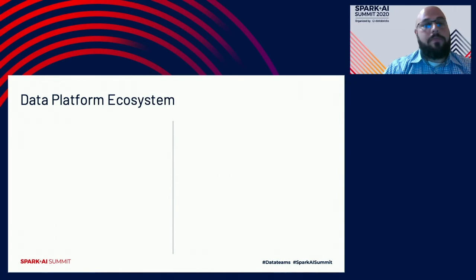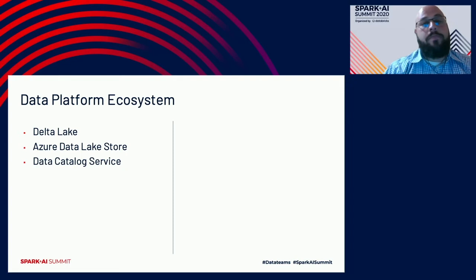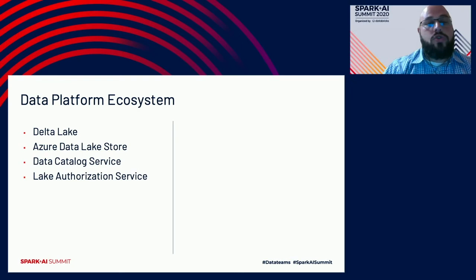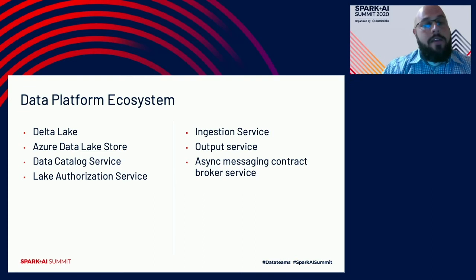Let's talk more about the different components of that architecture. We leveraged Delta Lake as a storage layer on top of Azure Data Lake, since it offers ACID transactions on Spark. The Data Catalog service captures metadata about our data sets and transformations to more easily find, access, and manipulate that data. The Lake Authorization service was put in place to automate and better control access to data sets. The ingestion service streamlines the flow of data in, and the output service standardizes the flow of data out. Finally, the Async Contract Broker service is our in-house message schema repository that proactively prevents services from releasing breaking schema changes.